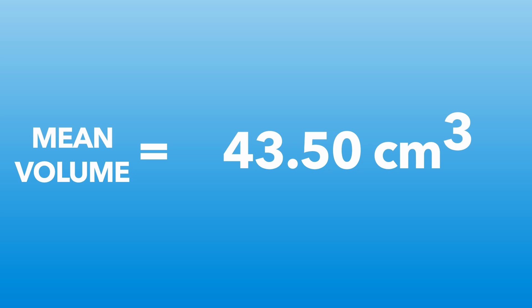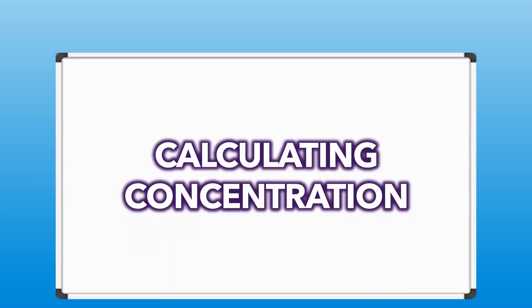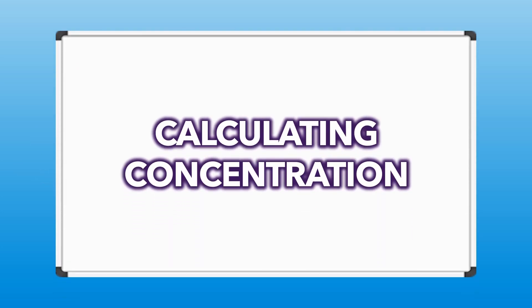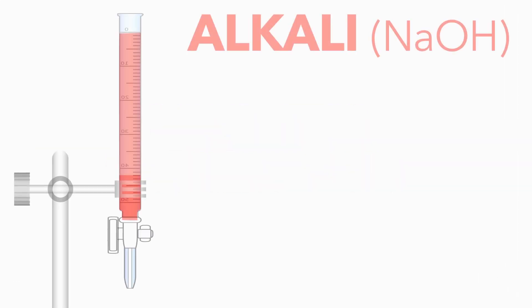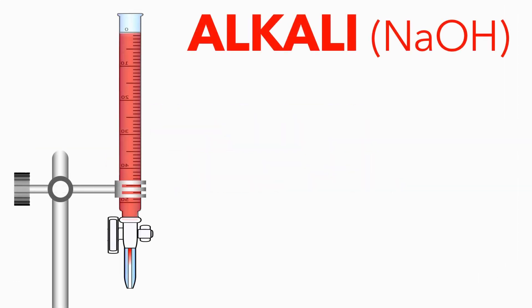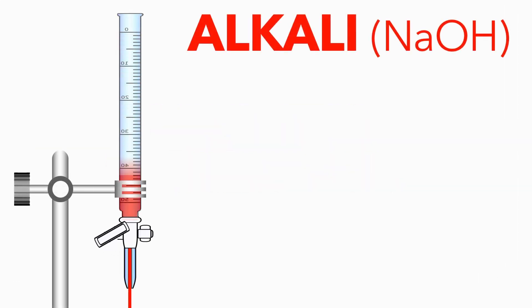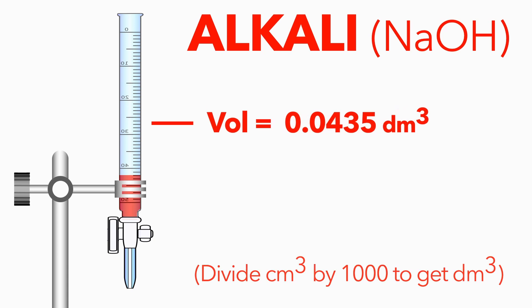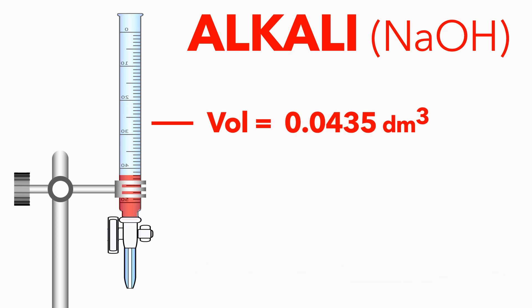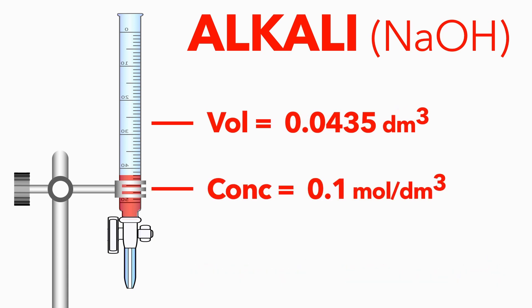Let's say we got 43.5cm³. So, how do we use this result to calculate the concentration of our acid? Well, we know that the exact volume of alkali added was 43.5cm³, or 0.0435 dm³, and the known concentration was 0.1 mol/dm³.